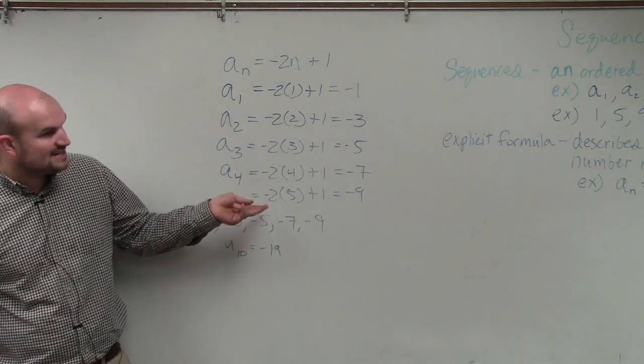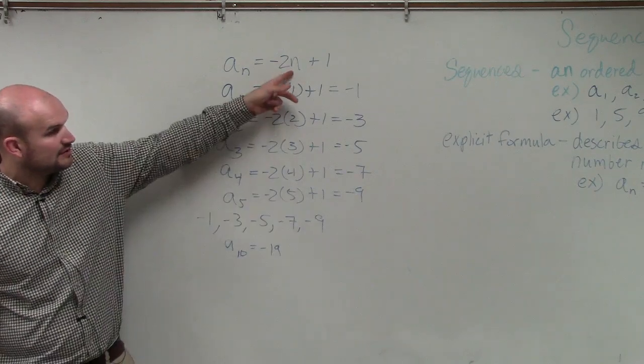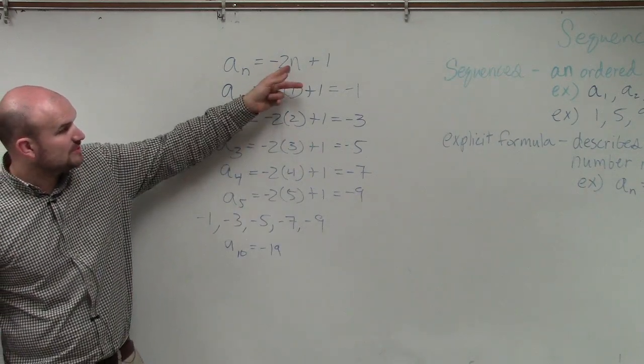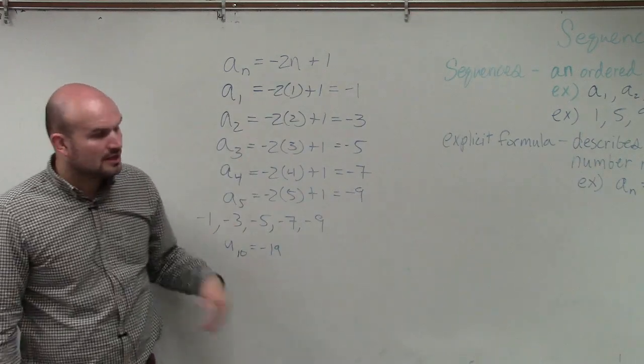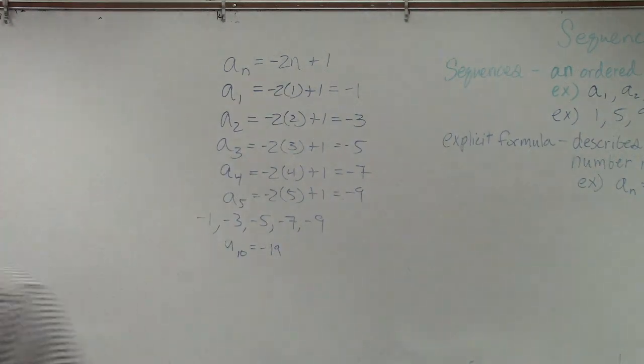So if I wanted to figure out what the 10th term would be, I just put a 10 in for the n. Negative 2 times 10 is negative 20, plus 1 is negative 19. I just want to get you guys to understand the power of the explicit formula.